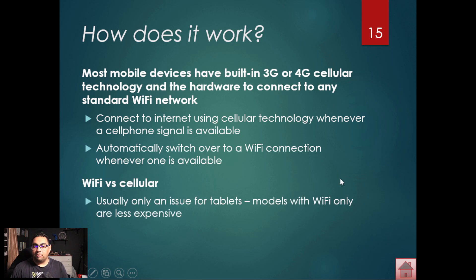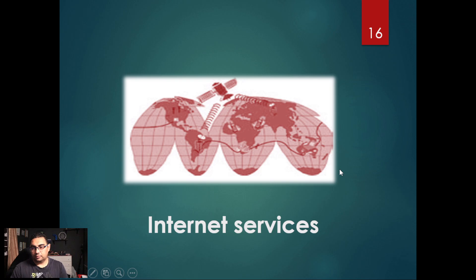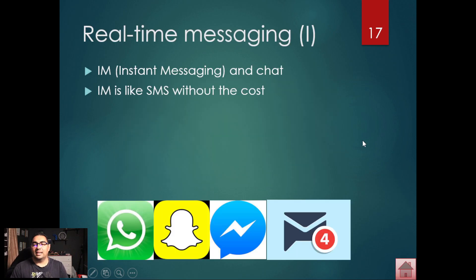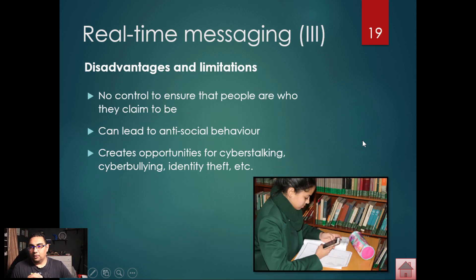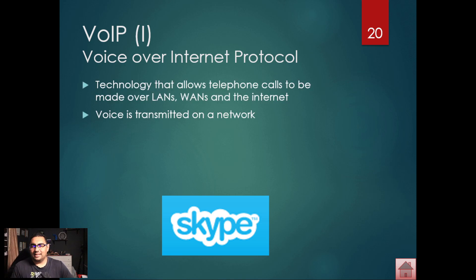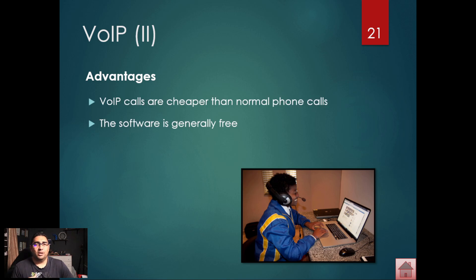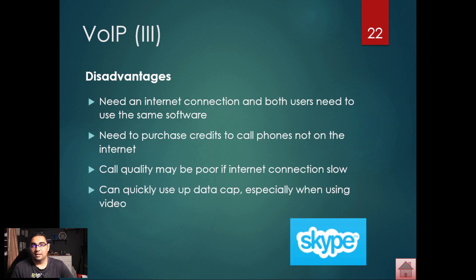Know Wi-Fi versus cellular — you'll have to work out based on the scenario what's best for the individual. Then there are internet services like real-time messaging. Voice over Internet Protocol is where voice is transmitted over the internet — things like Skype, WhatsApp calls, WhatsApp video calls, Zoom. Know some of the advantages and disadvantages of that as well.